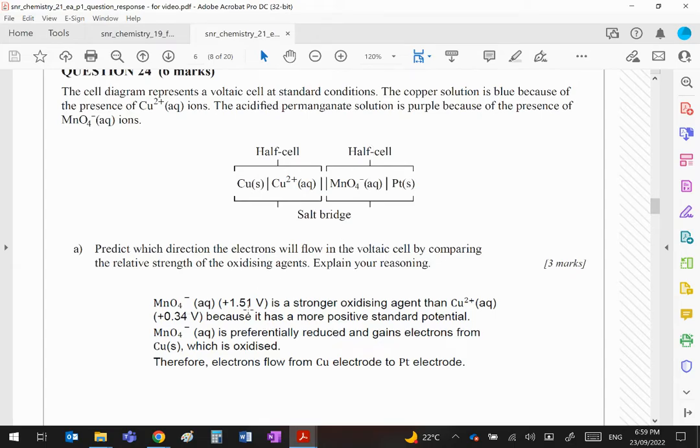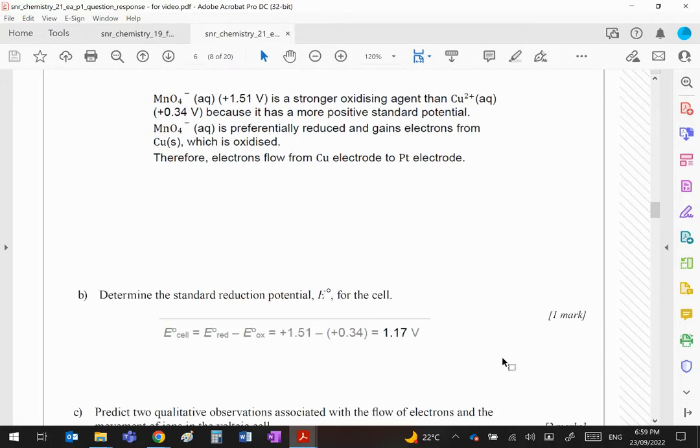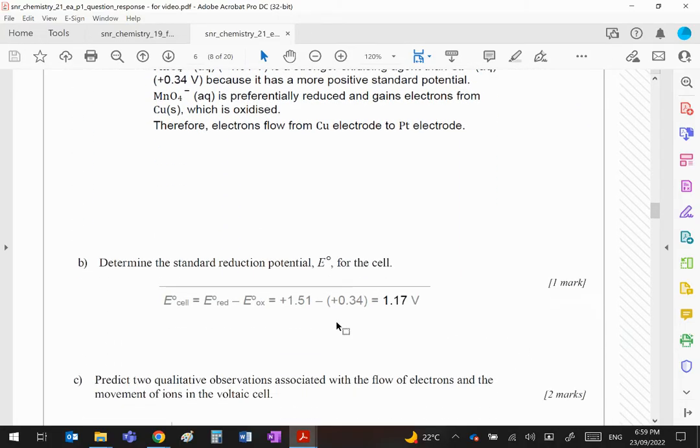You can see the answer: manganate has a bigger plus value, it's a stronger oxidizing agent, and therefore it will be the one to get reduced and gain electrons from copper which is oxidized. The standard electropotential will simply be the 1.51 take away 0.34 to give you 1.17 volts.